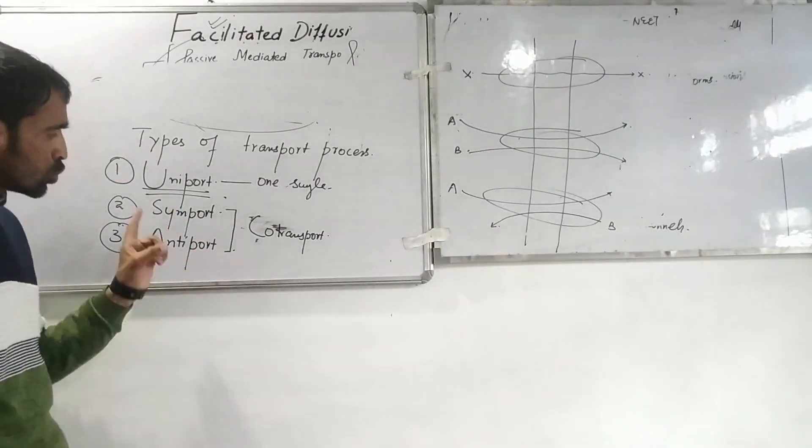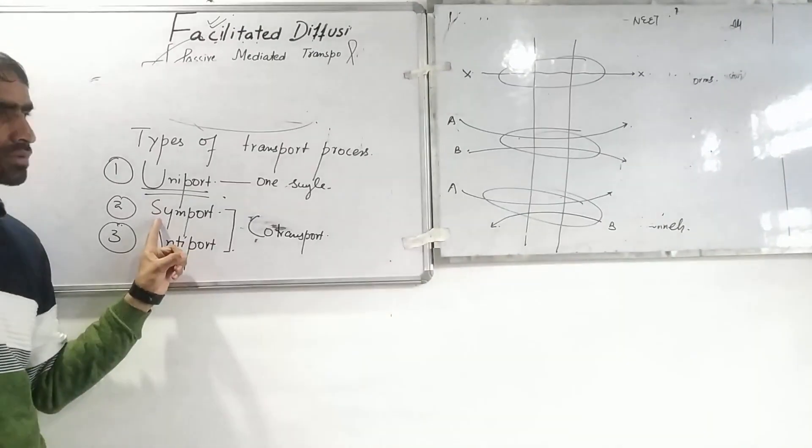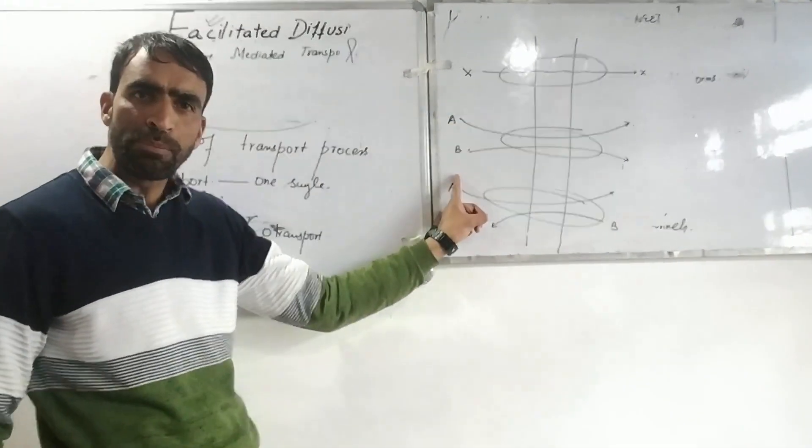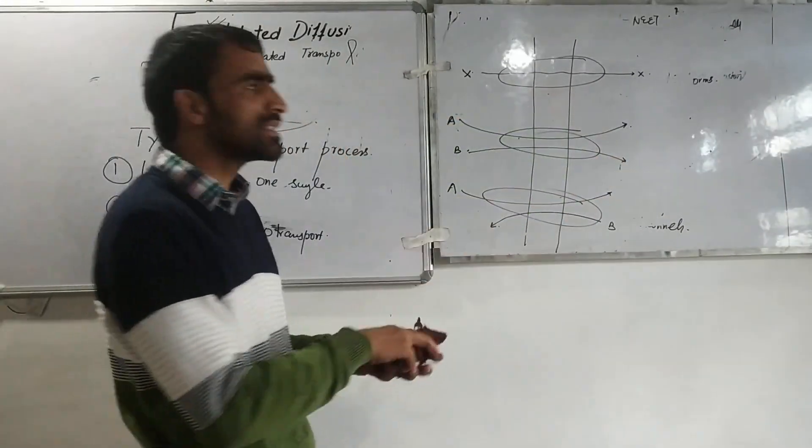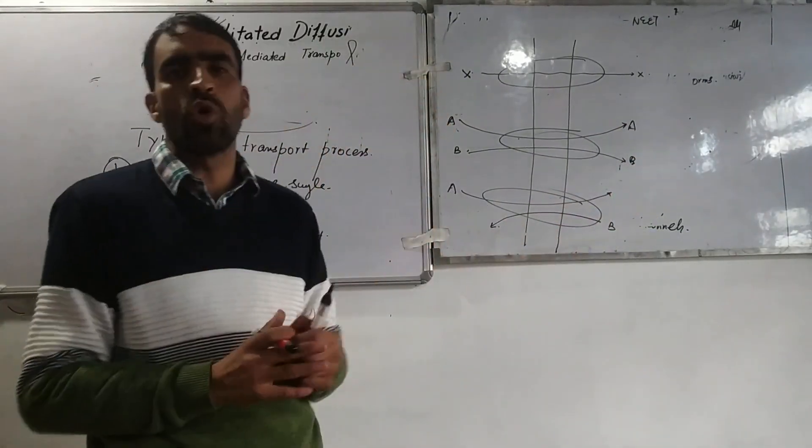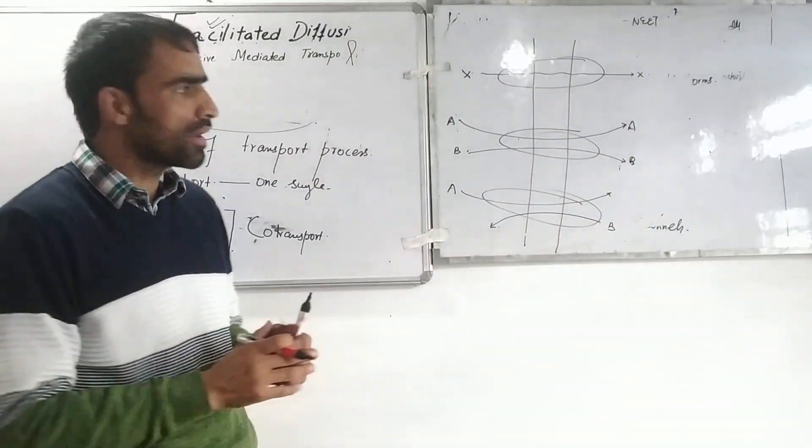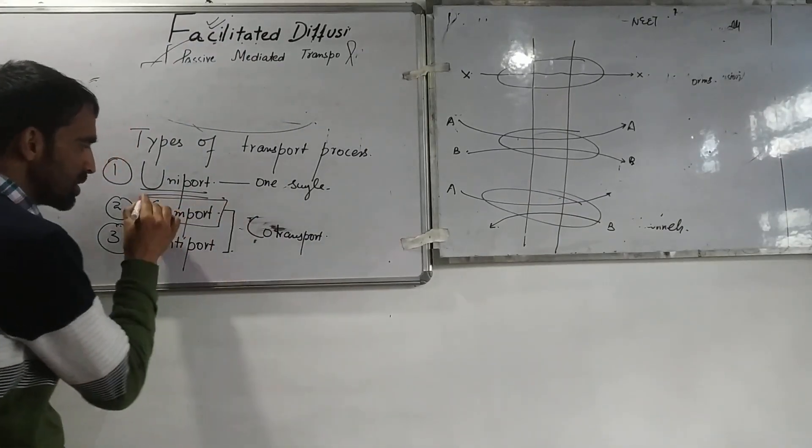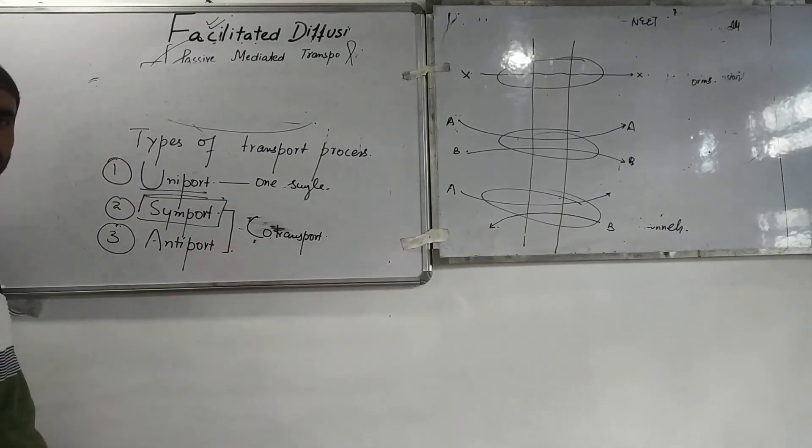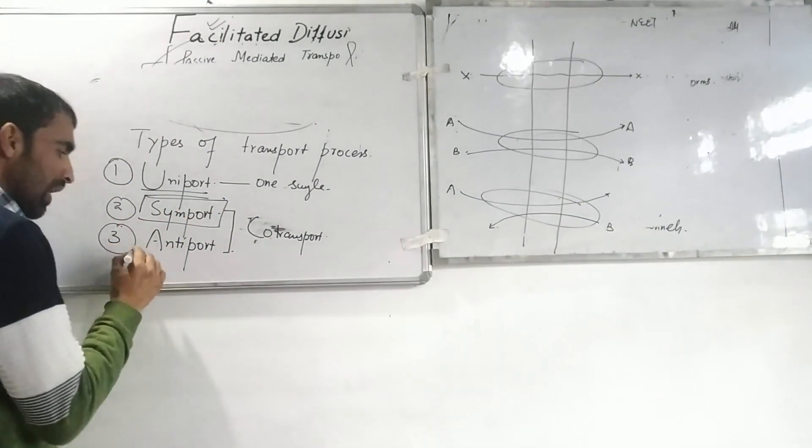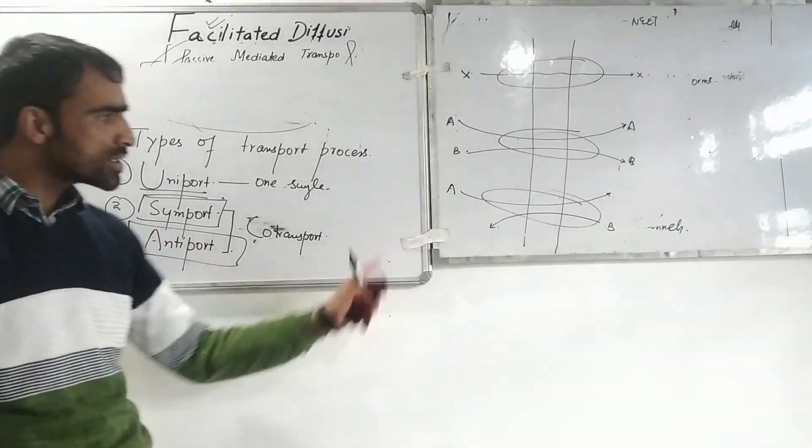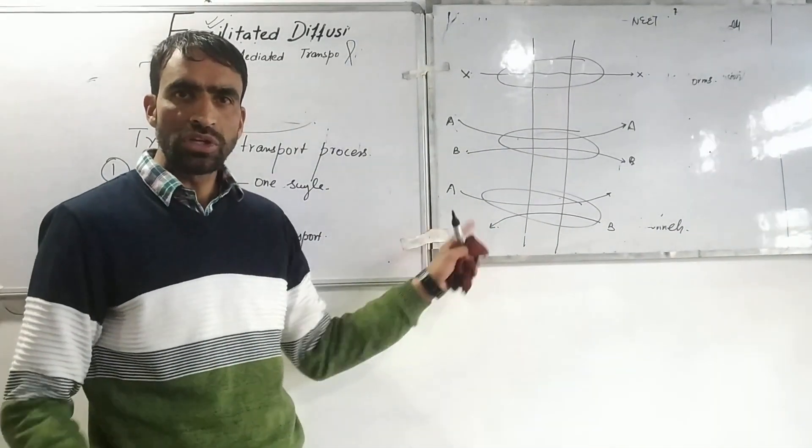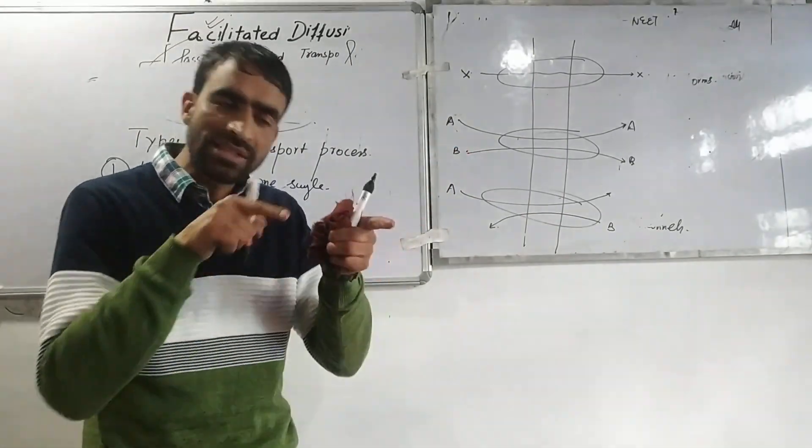If two different molecules A and B simultaneously enter the cell, direction same, please remember this will be called as simport, a type of co-transport.